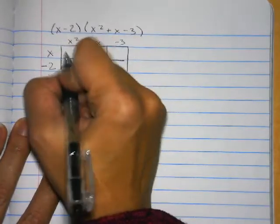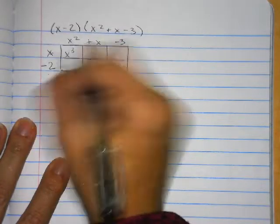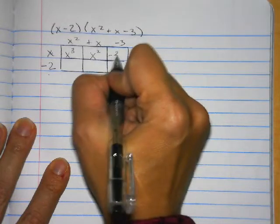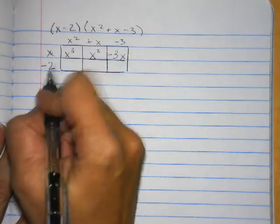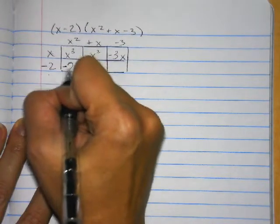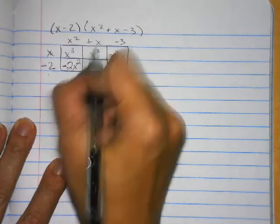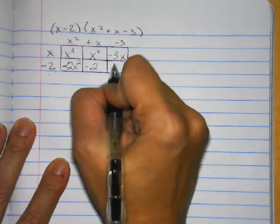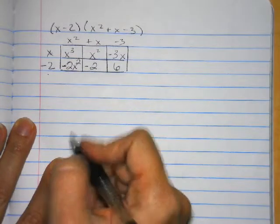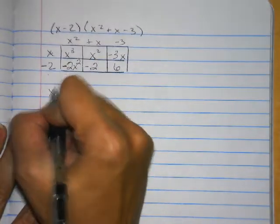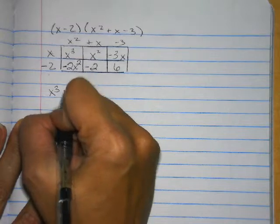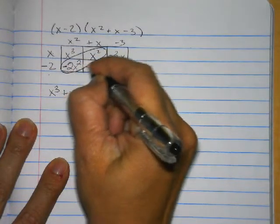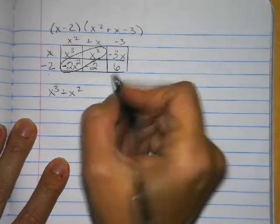x times x squared is x to the third. x times x is x squared. x times negative 3 is negative 3x. Negative 2 times x squared is negative 2x squared. Negative 2 times x is negative 2x. And negative 2 times negative 3 is positive 6. So when I write these out, I have x cubed plus x squared — I'm going to write my like terms next to each other.